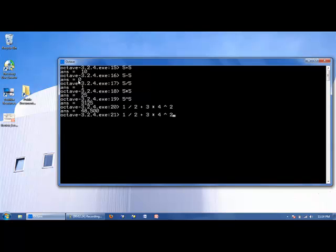What if we take the same expression and add a parentheses? We get a very different result. 3 times 4 is 12. 12 squared is 144, plus 1 half. So be very careful when using parentheses in your code.